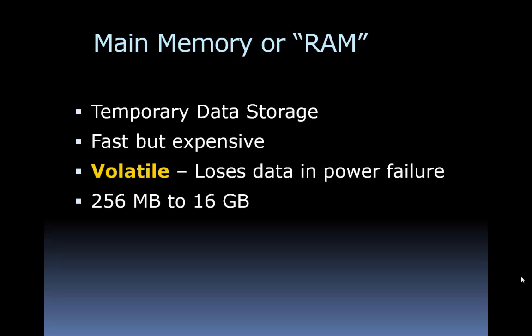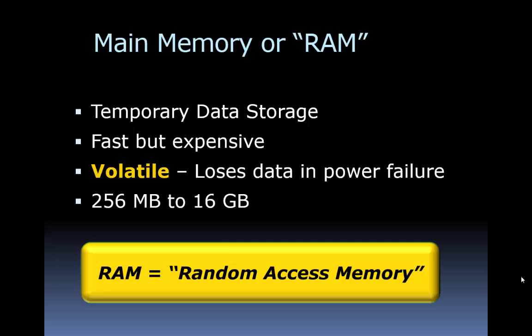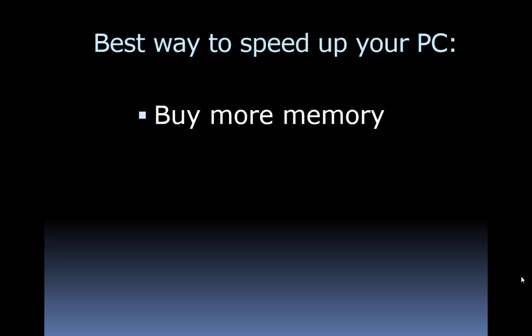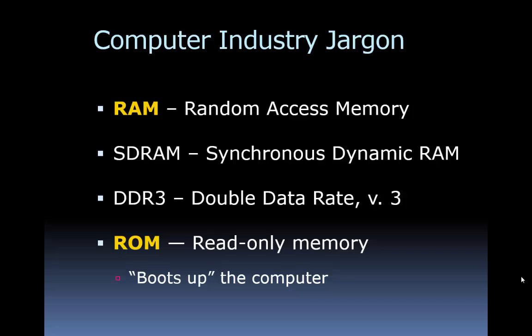RAM sizes nowadays range from 256 megabytes up to 16 gigabytes. One of the best ways to speed up your PC is just to buy more memory. Memory continually gets cheaper and cheaper, so maybe it was expensive when you bought your PC, but a year or two later the price has gone down quite a bit, and buying more will give you a nice bump up in speed.